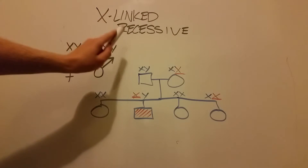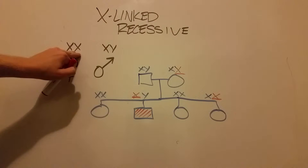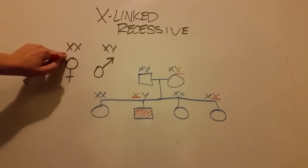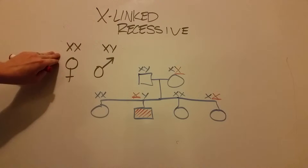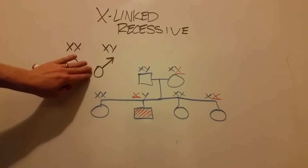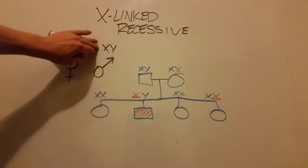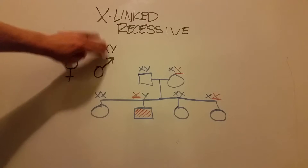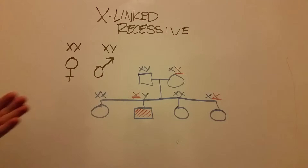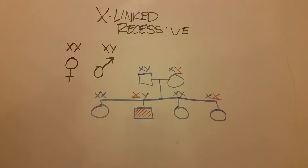These diseases follow an X-linked recessive pattern, meaning that if there are two X chromosomes and one carries the recessive trait and one is dominant, the disease won't manifest in the phenotype. However, we commonly see these diseases manifest in males because their genotype only has one X chromosome. Thus, if that X carries the affected genotype, the trait will manifest because there's no opposite dominant X to suppress it into a carrier state.